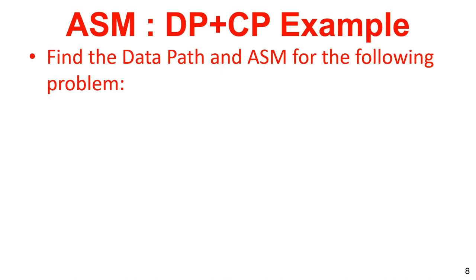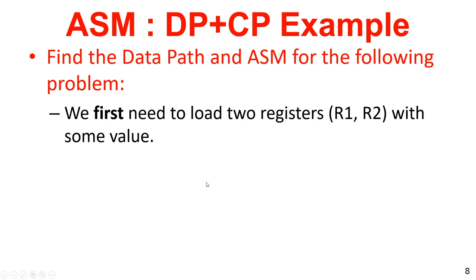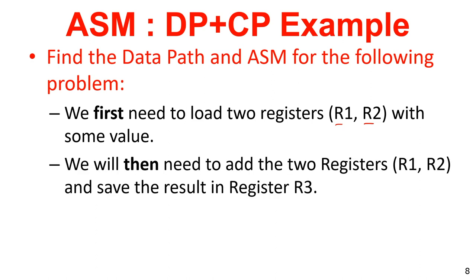Let us look at the English-like statement to find the data path and ASM for the following: we first need to load 2 registers R1 and R2 with some value from the input — input may be from switches or from the external world. Then we need to add the 2 registers R1 and R2 and save the result into register R3. Register is by default a sequential element, and to put a value into a register we need to enable the load.